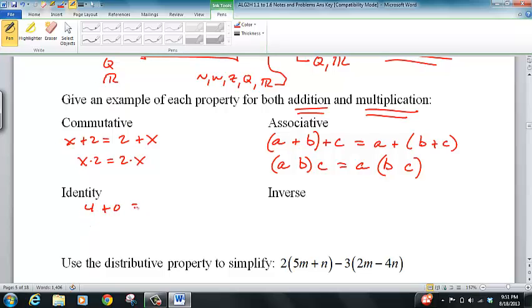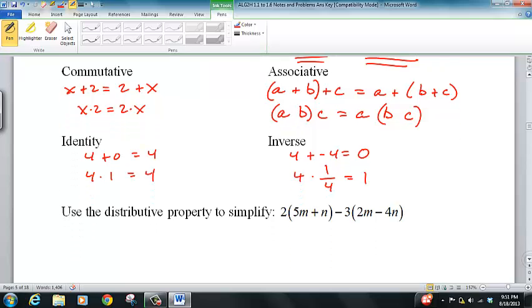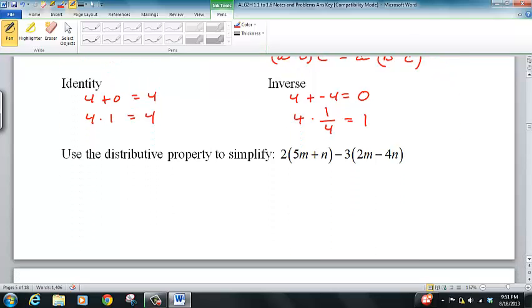The identity just means 4 plus 0 is 4, 4 times 1 is 4. The inverse means 4 plus negative 4 equals the identity, and 4 times 1 over 4 equals the identity. The second one is always multiplication, the first one is always addition. Finally we have the distributive property, which is a little bit of both - we multiply and we do some adding.